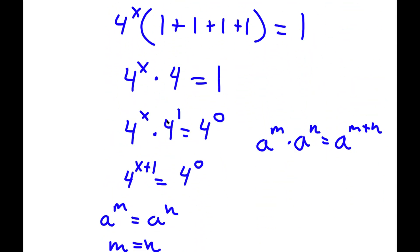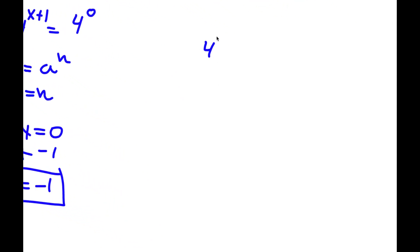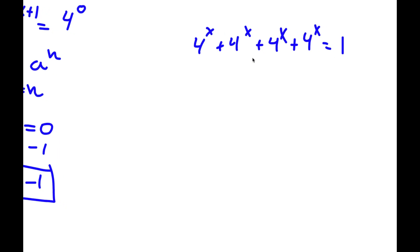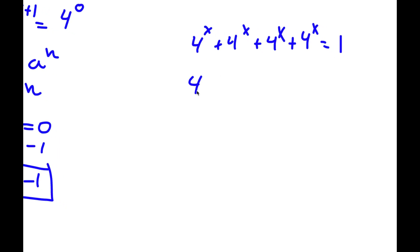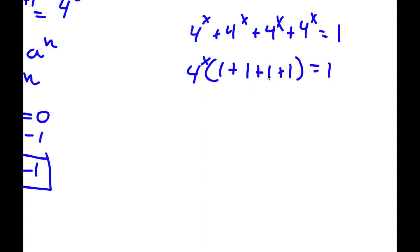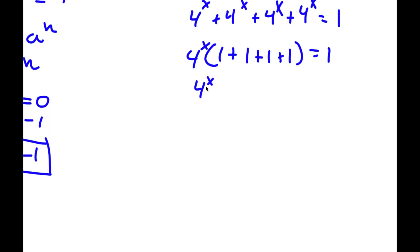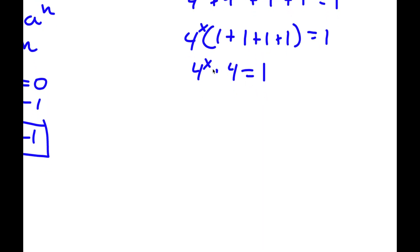Now another method of doing this is — we first start with 4 to the power of x plus 4 to the power of x plus 4 to the power of x plus 4 to the power of x is equal to 1. So I factor out 4 to the power of x, giving 4 to the power of x times (1 plus 1 plus 1 plus 1) is equal to 1. Simplifying the parentheses, I get 4 to the power of x times 4 is equal to 1.